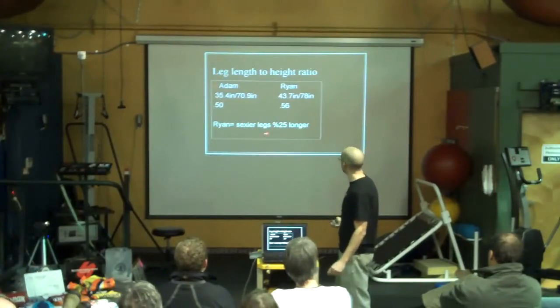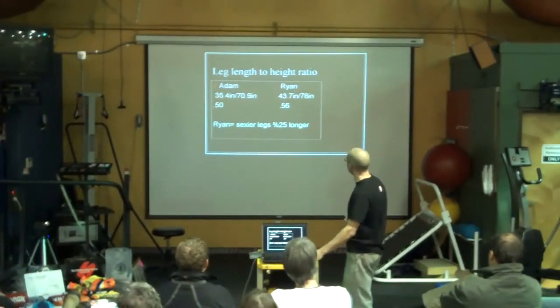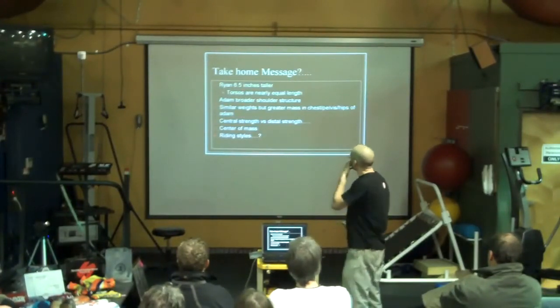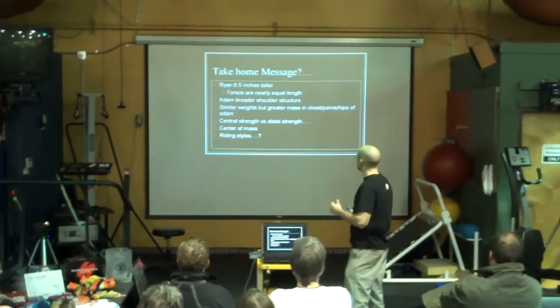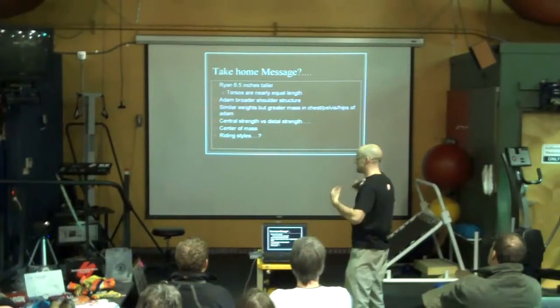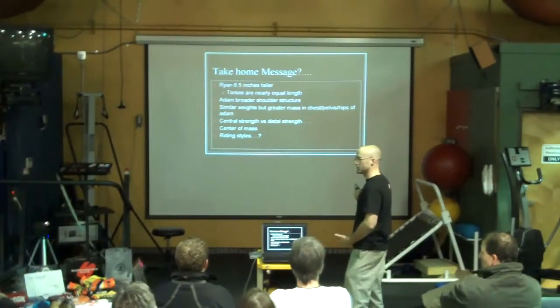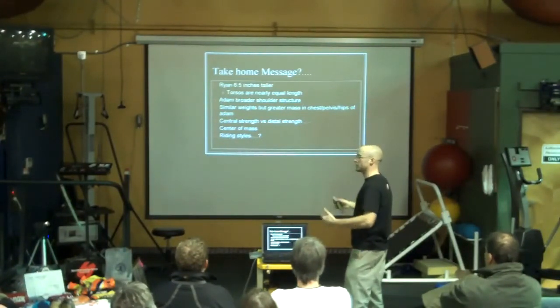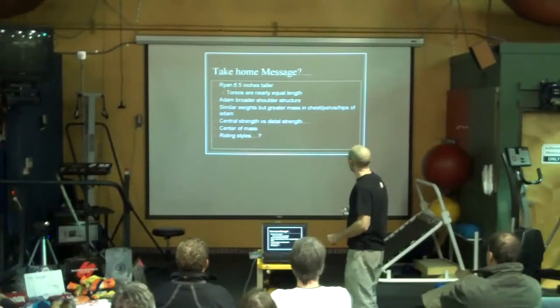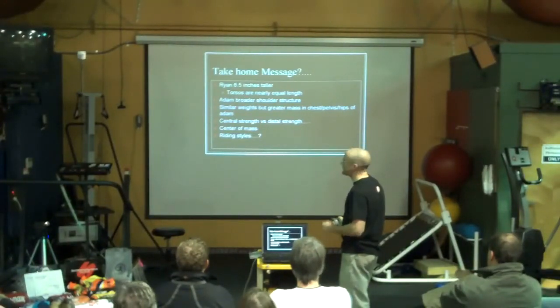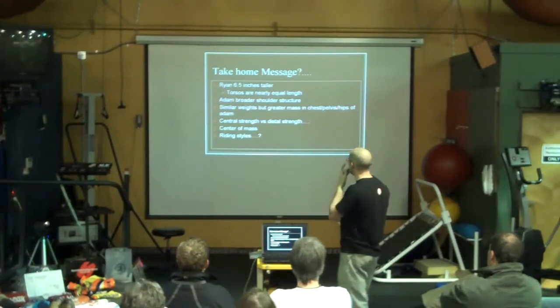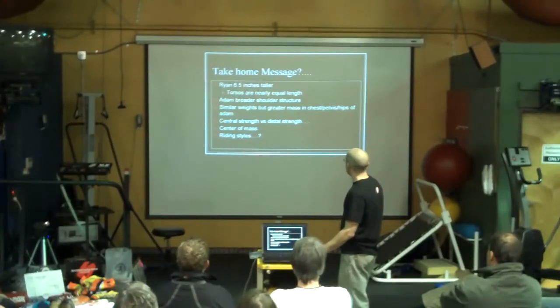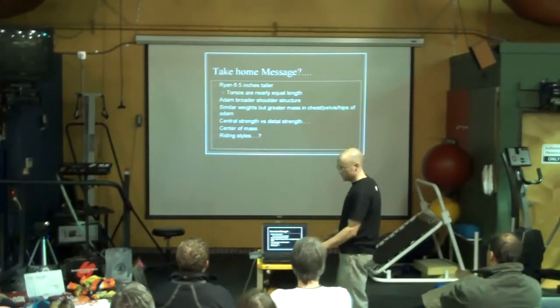He's over half legs to height. Pretty crazy. So take home messages from this is just think about how much muscle mass sits in the center of Adam that does not sit in the center of Ryan, and how much leverage Ryan has in his incredibly long appendages. Now, their weights aren't that much different. It's 12 pounds, but that's a little high even for Adam, so it may even get closer at other times.